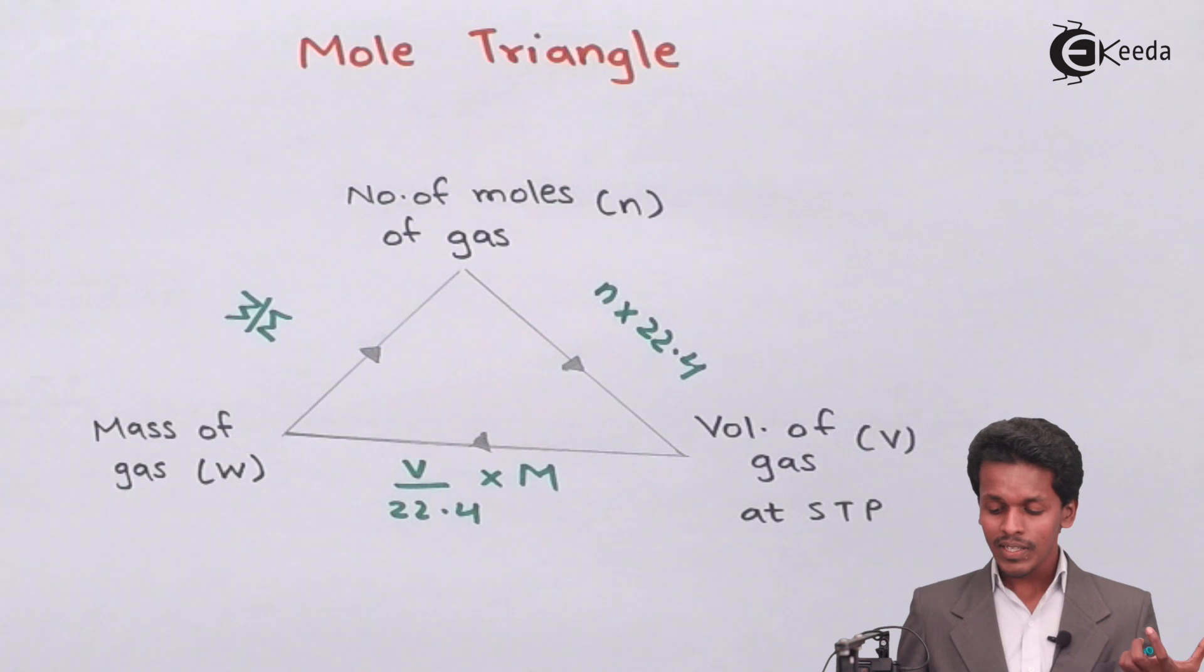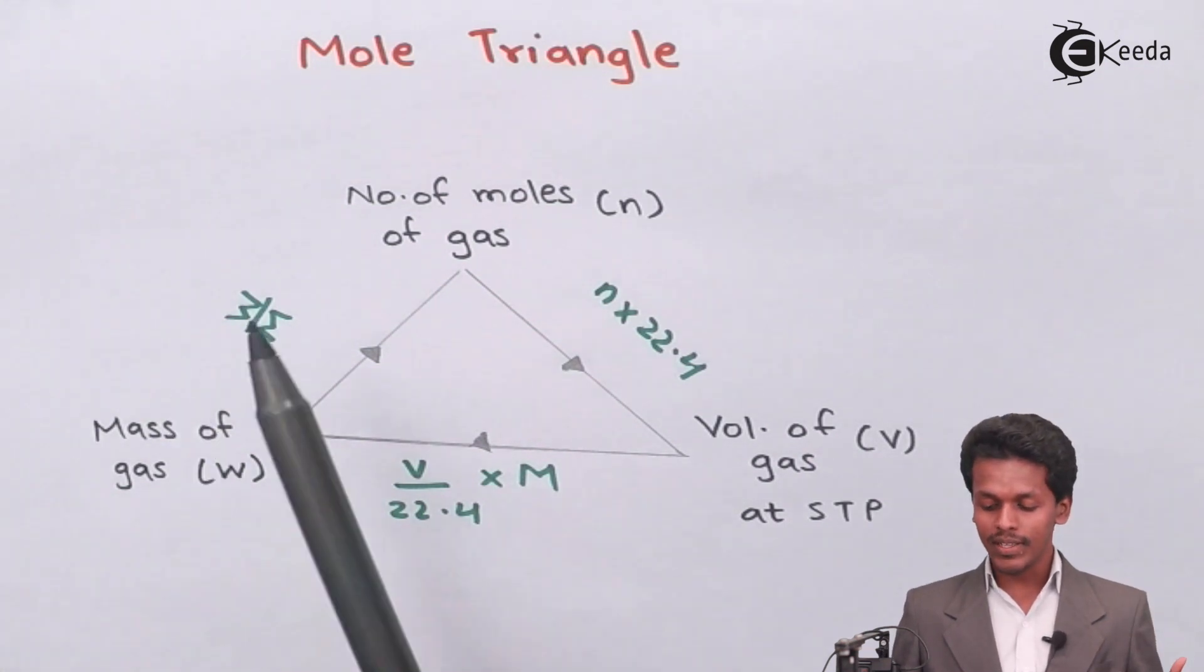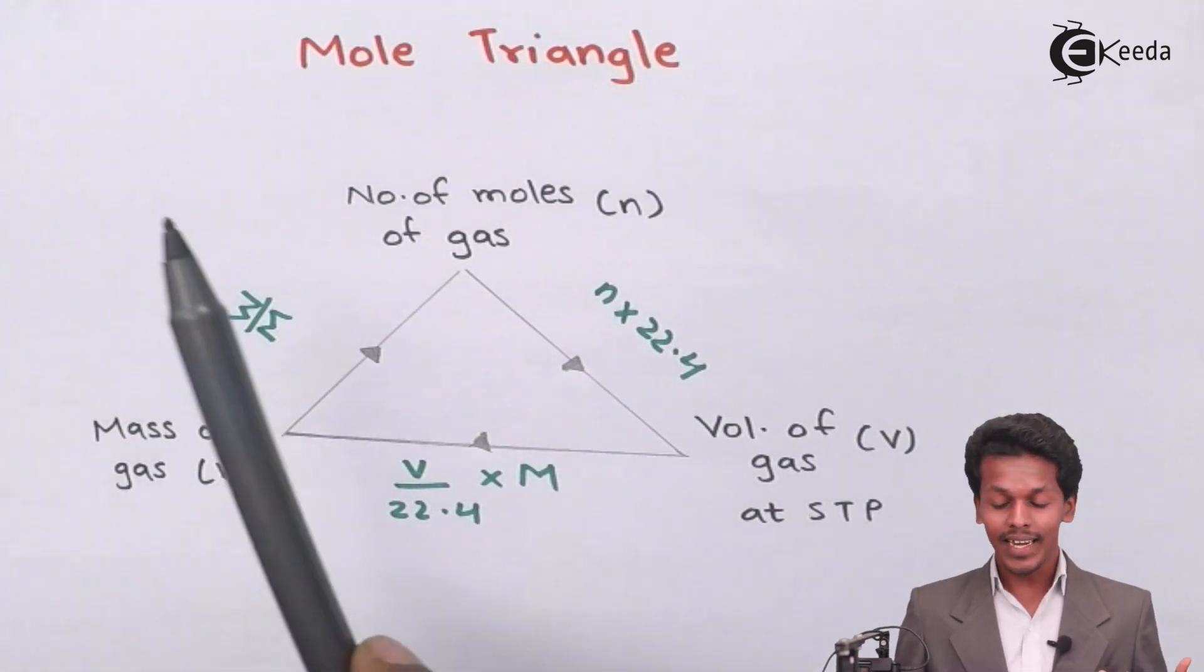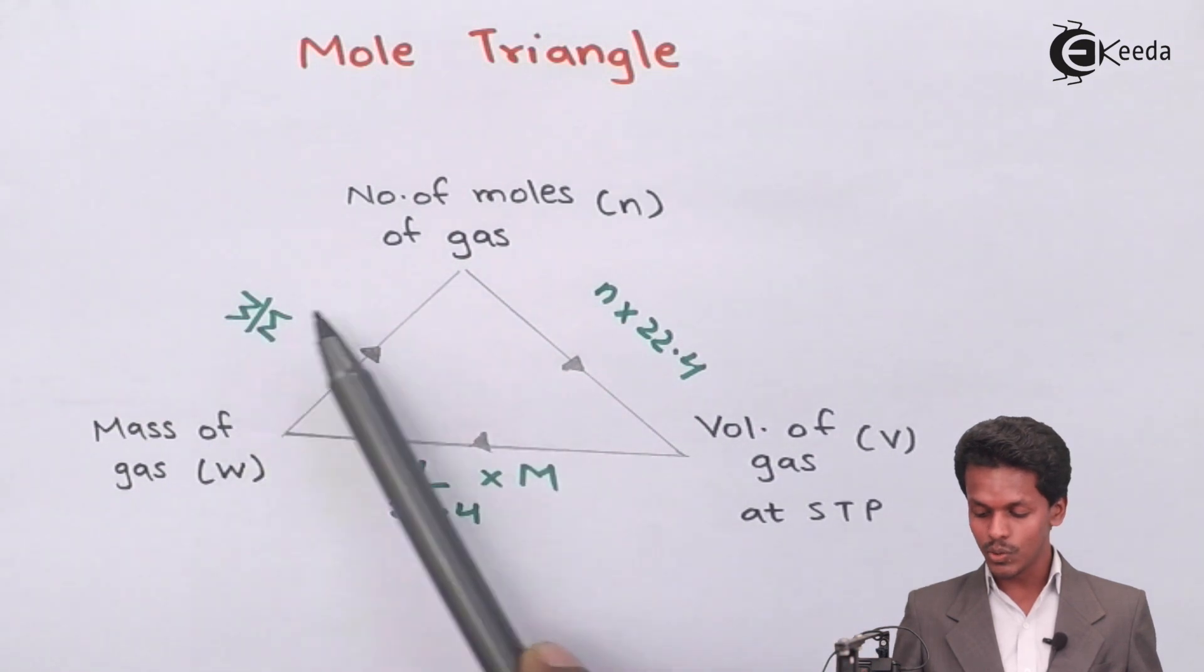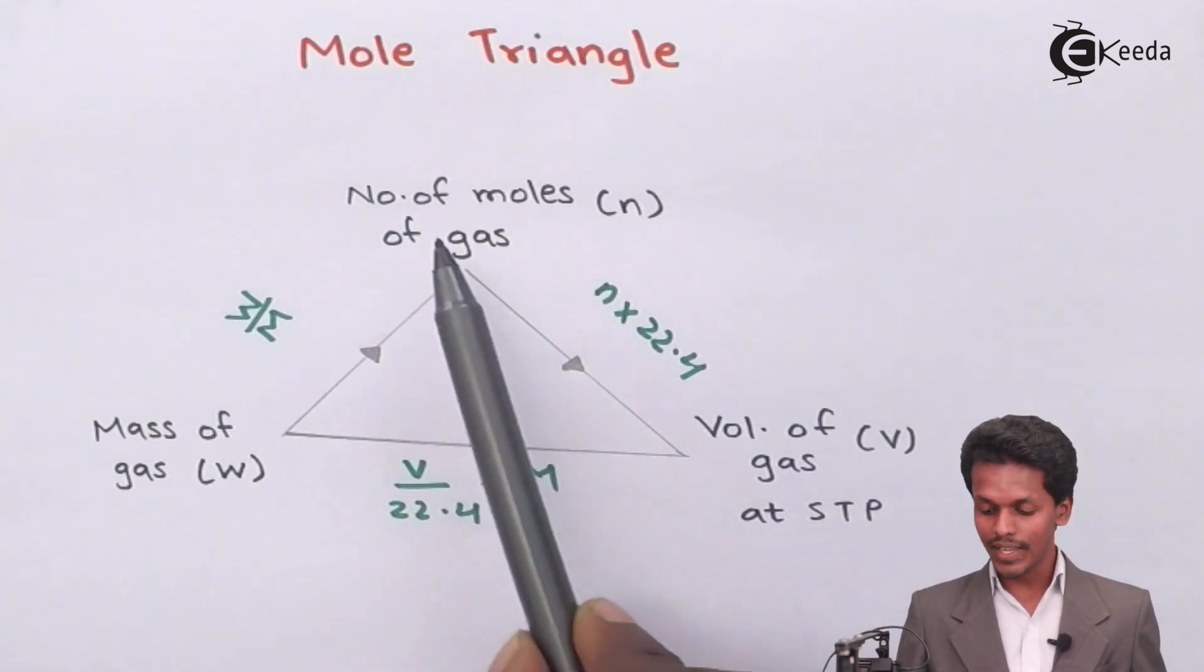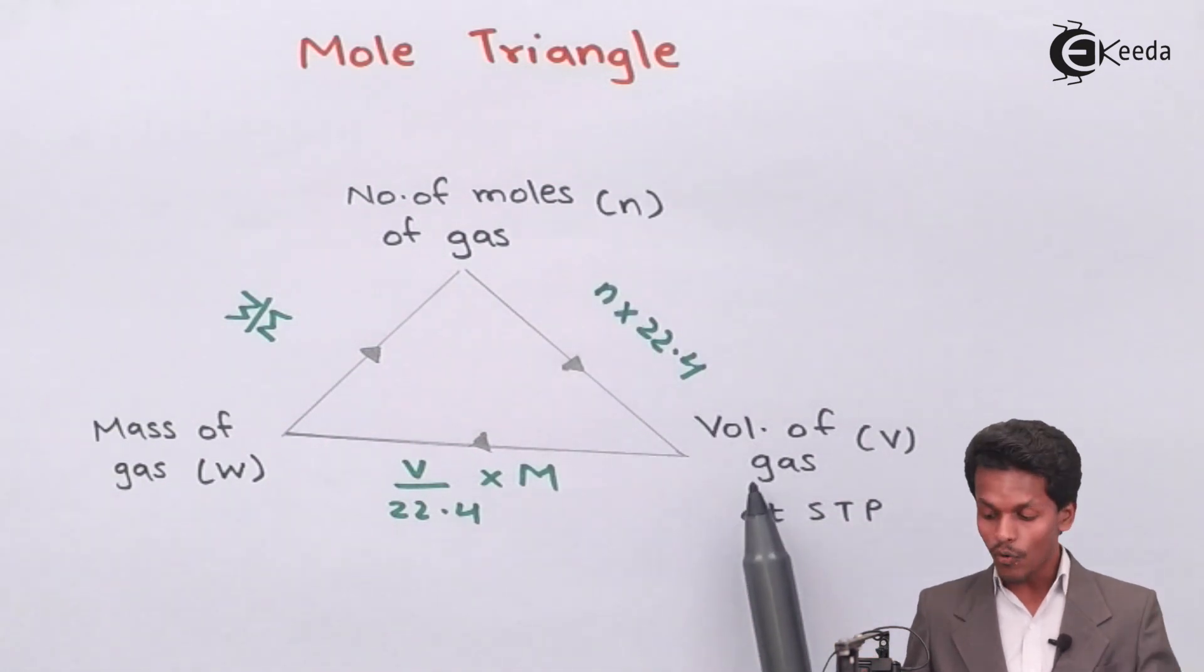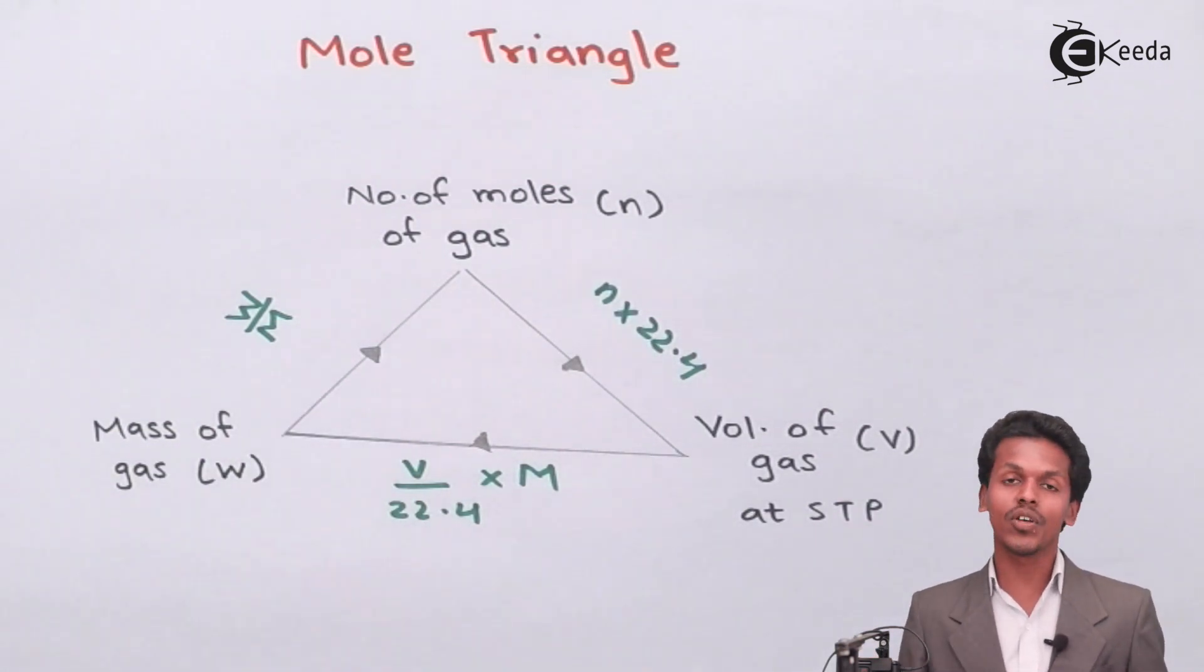Suppose I want to calculate the number of moles. This triangle has three sides and three points where I can easily calculate the number of moles, the volume of that particular gas, and the mass of that particular gas. All three have a relationship with each other.